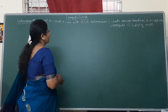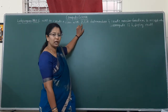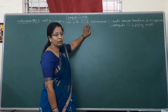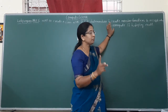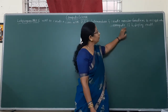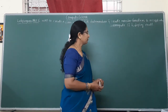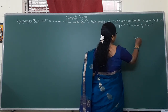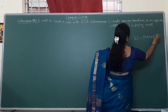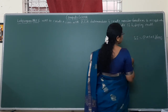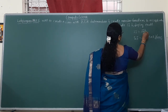The program is to create a class with data members: principal amount, time, and rate of interest. We need to create member function 1 to accept the P, T, R values and compute the simple interest, and finally display the result. The formula: simple interest equals P into T into R, whole divided by 100. This is your C++ expression; your mathematical expression is PTR divided by 100.